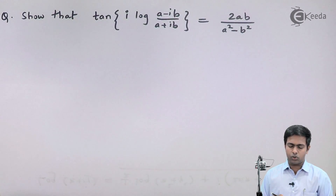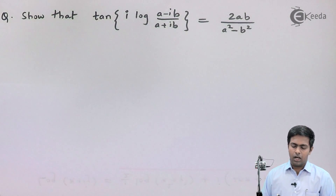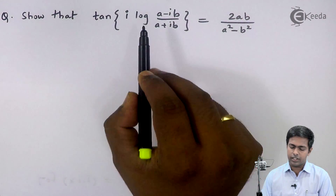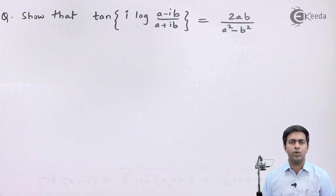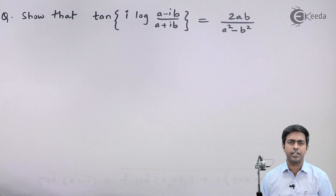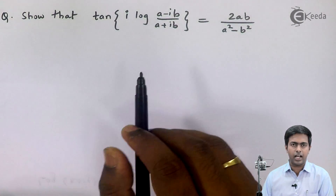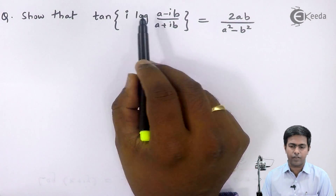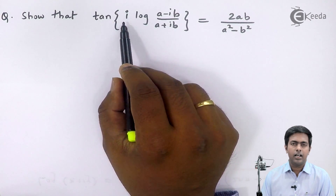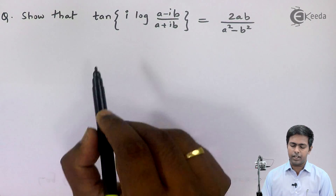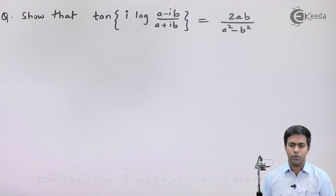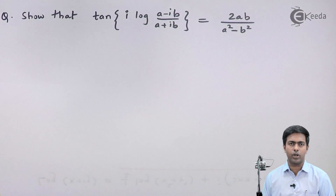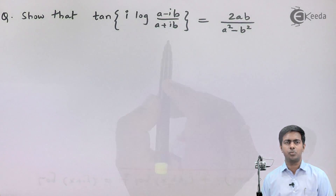To start with the solution, I will first find the log of these complex numbers using the formula of logarithm of a complex number. After that I will multiply the answer with i, and then find the trigonometric ratio — that is, tan of that value — and prove it equals 2ab/(a² − b²).